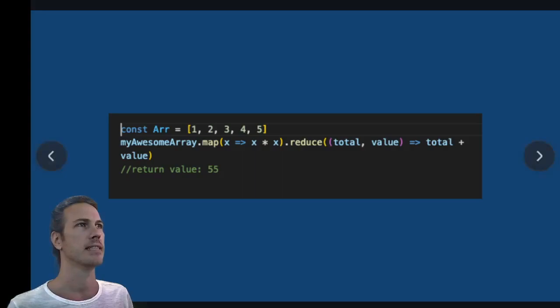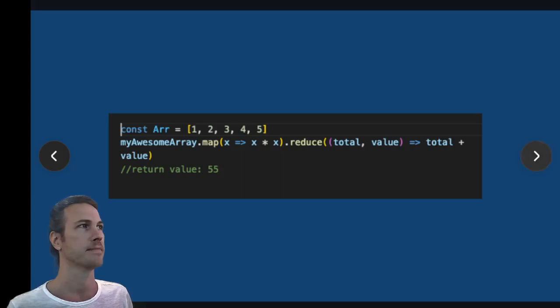A way to remember this that is also silly is that maps are used by pirates, and pirates use a lot of chains on their pirate ships, which is a bit of a stretch, but these are all silly examples. So if you remember that maps are used by pirates, pirates use chains on their ships, so maps can be chained whereas forEach cannot.